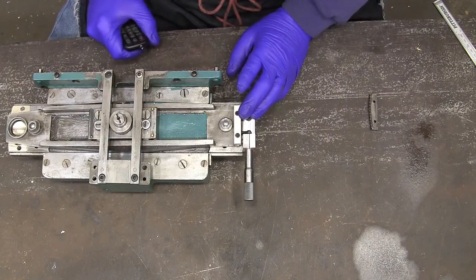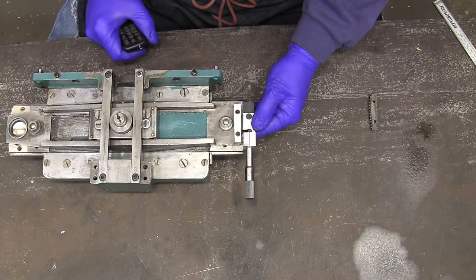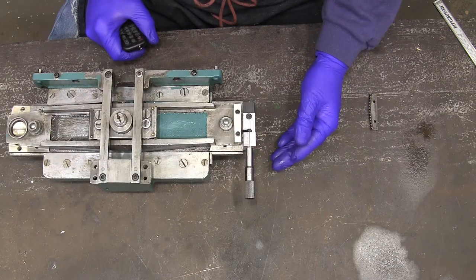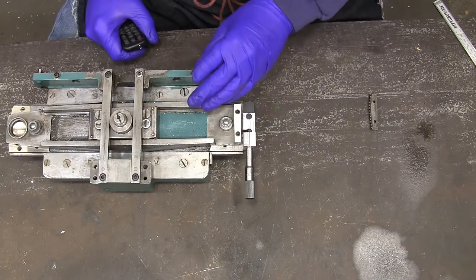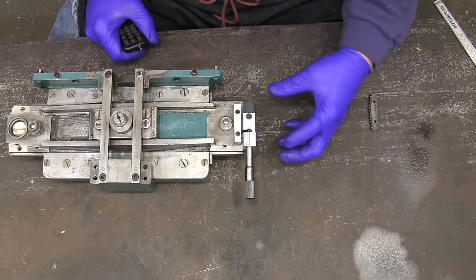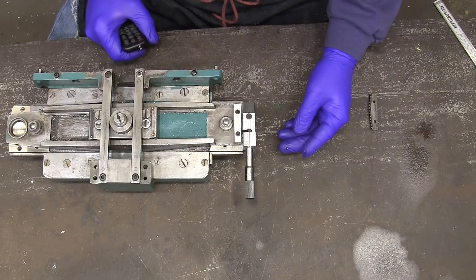This is the taper attachment off of my Monarch 10 EE. I wanted to show you this video because it's what I've been working on this week, and because there are some people out there that have this same attachment and they don't have the part that adjusts the attachment, which was my problem. So I thought this might be helpful to some other people.